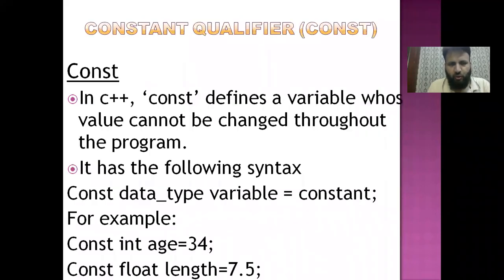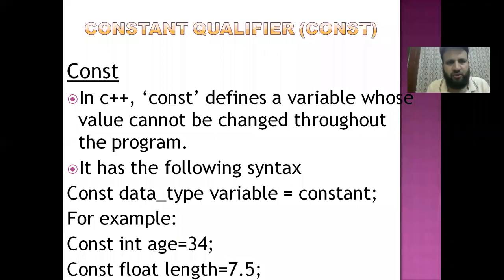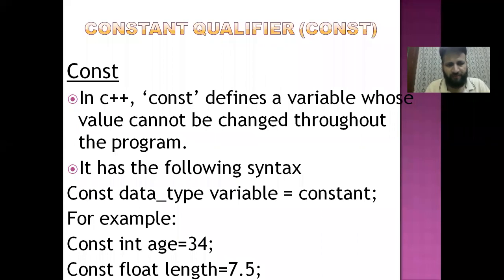Now we will move forward and see what is the constant qualifier. In C++, a constant defines a variable whose values cannot be changed throughout the program. It has the following syntax: const data_type variable = constant. For example, integer age = 34, or const float length = 7.5.